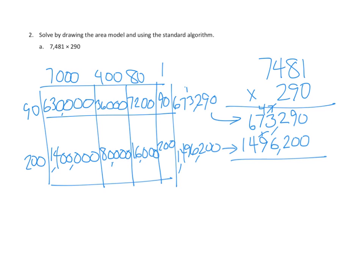Now let's add our two partial products together. Ones: 0. Tens: 9. Hundreds: 2 plus 2 is 400. Thousands: 3 plus 6 is 9,000. Ten-thousands: 7 plus 9 is 16 ten-thousands, so record 6 and carry 1. Hundred-thousands: 6 plus 4 plus 1 is 11, so record 1 and carry 1. Millions: 1 plus 1 is 2. Our final answer is 2,169,490. And remember, as you get to Problem 3 in tonight's homework, you're just using the standard algorithm.